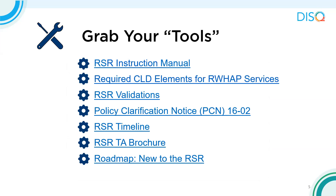We're going to start with all of the great tools and resources available to support you during your RSR process. All of these links are in the document Audrey chatted out at the beginning of the webinar. First, the RSR instruction manual for 2021 has been posted on Target HIV — this is the number one resource for all RSR related questions. Along with the instruction manual, the required client level data elements for Ryan White Services chart is a great tool to know which data elements to include depending on what services clients received. The 2021 validations are also available on the Target HIV website, listing all errors, warnings, and alerts you might encounter with your RSR data.